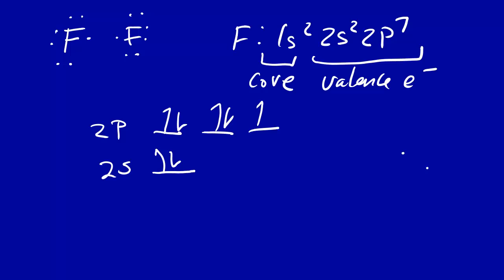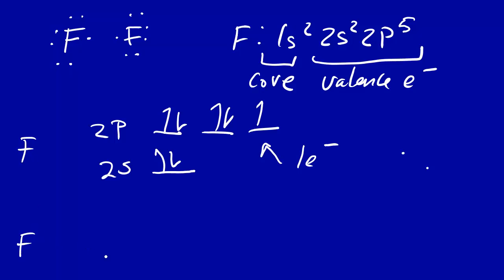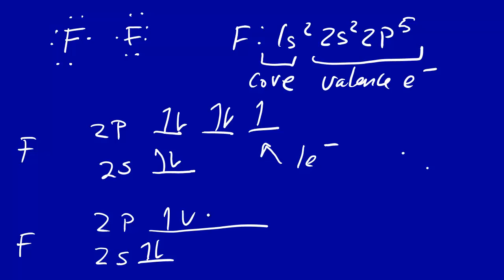That should be 2p⁵, not 2p⁷ — so 7 valence electrons total. From a valence bond perspective, we identify an orbital with just one electron in it for one fluorine atom. For a second fluorine we draw the same thing — the 2p orbital with seven valence electrons in the shell, and again one orbital with just a single electron. Valence bond theory says these two singly occupied p orbitals will overlap to form a bond.